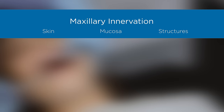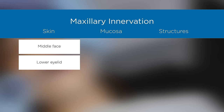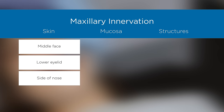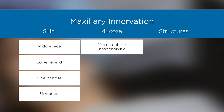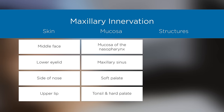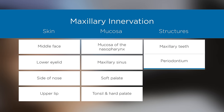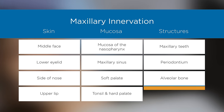The maxillary division of the trigeminal nerve is exclusively sensory and innervates the skin of the middle portion of the face, lower eyelid, side of nose and upper lip, the mucosa of the nasopharynx, maxillary sinus, soft palate, tonsil and hard palate, and the maxillary teeth, periodontium, alveolar bone, and gingiva.